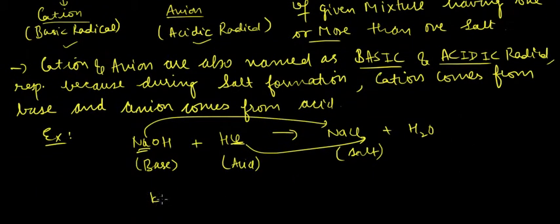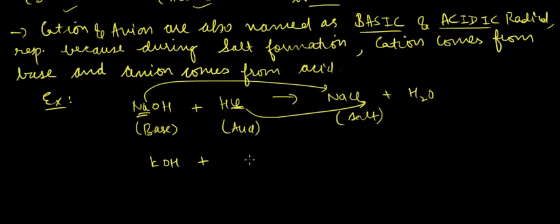Next example can be KOH which is a base and CH3COOH which is an acid. Cation comes from base and anion comes from acid. So we have CH3COOK formed plus H2O.